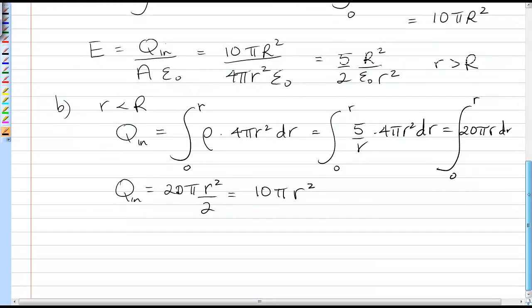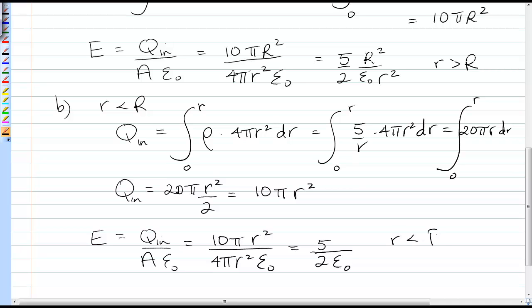The amount of charge inside depends on where that Gaussian surface is, which makes sense. If I take my Gaussian surface right to the edge, to r equals R, I get the same thing as I had before with the total charge. Gauss's law: q_in over A times ε₀. Now I have the variable r² on top and r² on the bottom. It turns out this electric field is a constant, 5/(2ε₀). That's for r less than R.